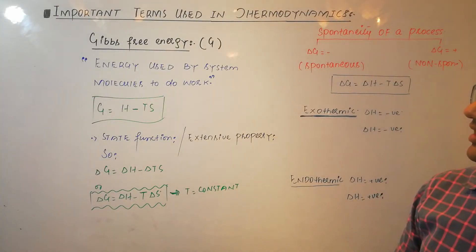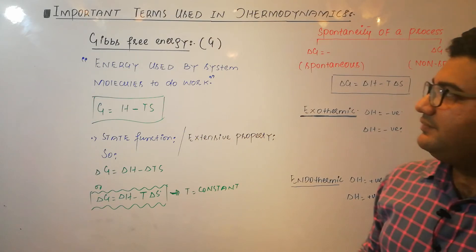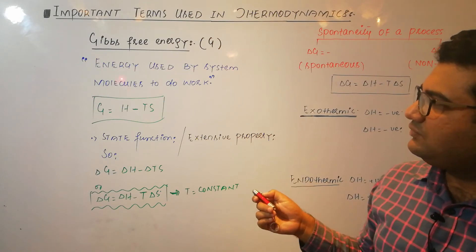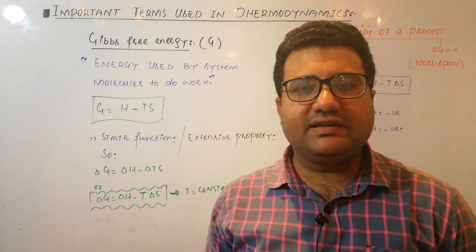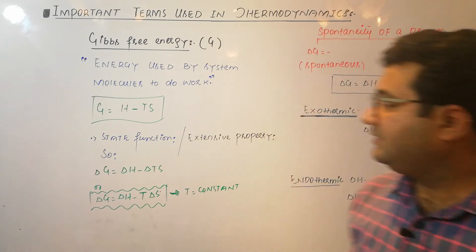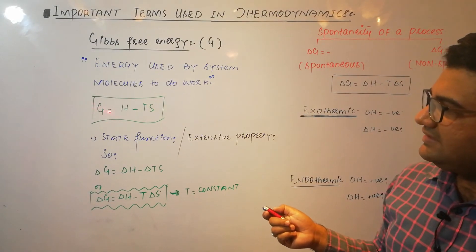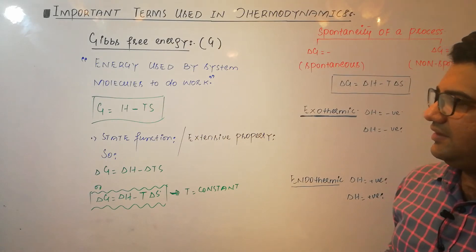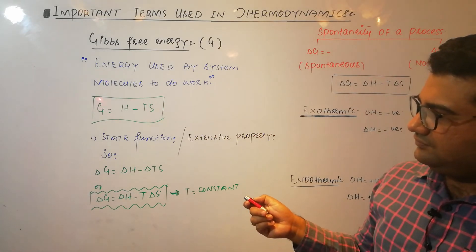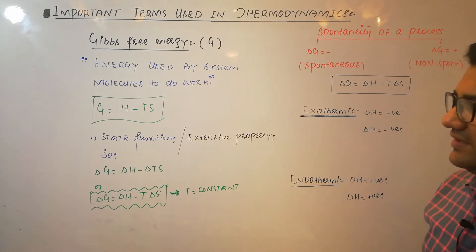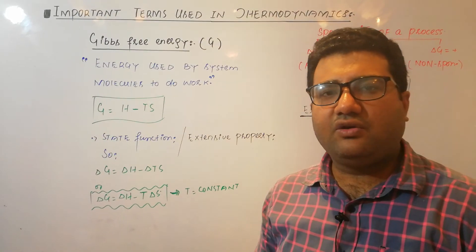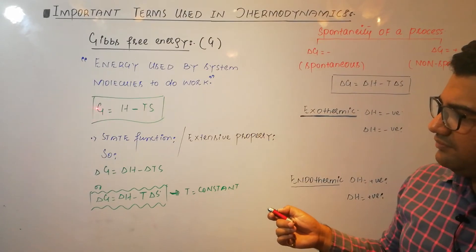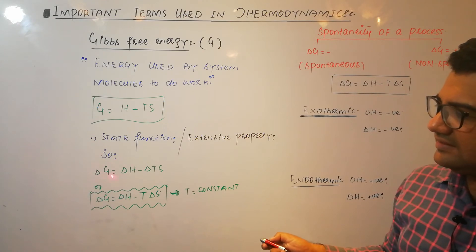The last important term in thermodynamics is Gibbs free energy, symbol G. It is defined as the energy used by system molecules to do work. The formula is G equals H minus TS, where H is enthalpy, T is absolute temperature in Kelvin, and S is entropy. Gibbs free energy is a state function — its absolute value cannot be measured, only the change delta G.